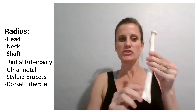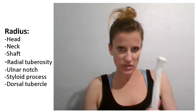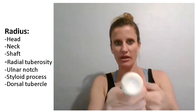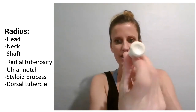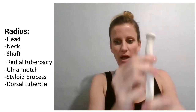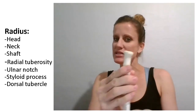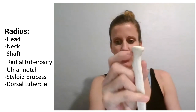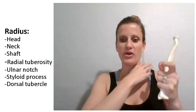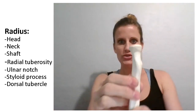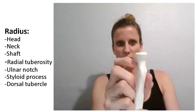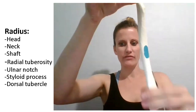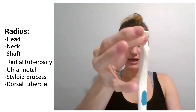When we look at the radius, first we'll look at the head, neck, and shaft. The proximal part of the radius looks like this — it has a perfect circle on the top of it. This is the head, the part that articulates with the capitulum of the humerus. The neck is then the thin area just below that. The head is the round part, the neck is where it gets thin and connects, and then the shaft is the remainder of the radius.